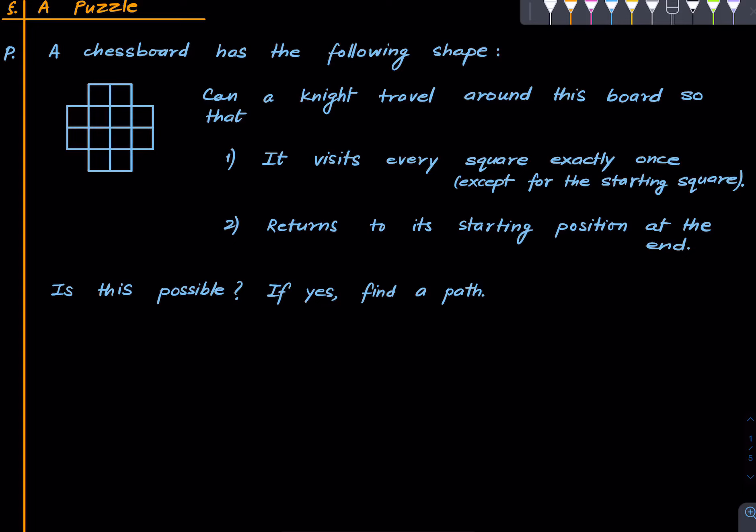So I hope the problem is clear. The problem is: is it even possible to do so? Can the knight find such a path? And if yes then find such a path. I do not want you to attempt this problem, I just want you to play along so that we can see why the notion of a graph just pops out of this puzzle.